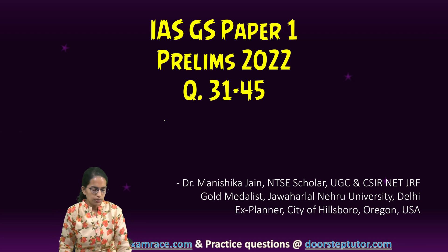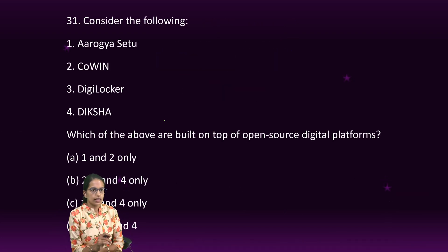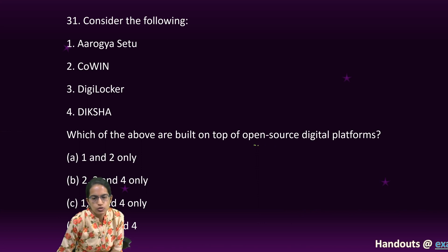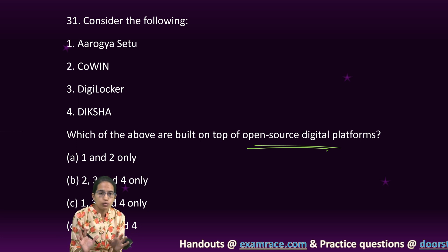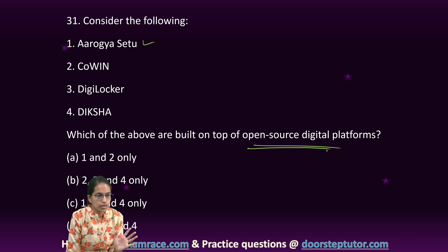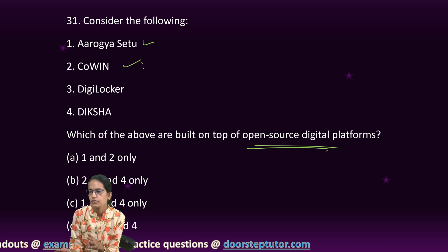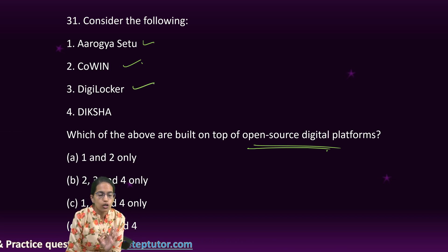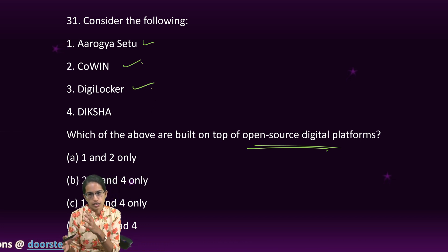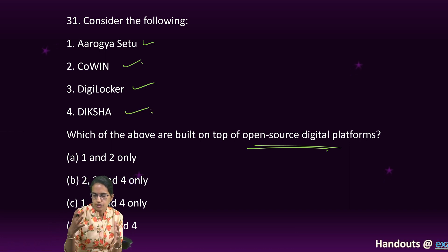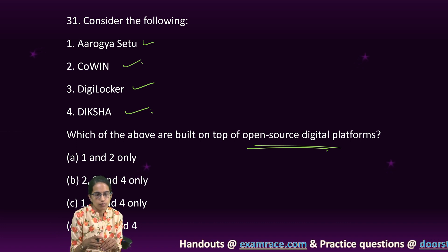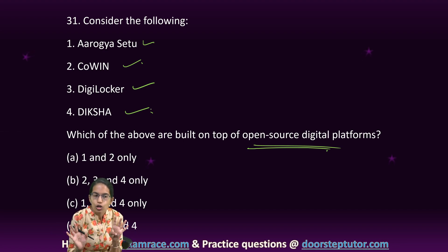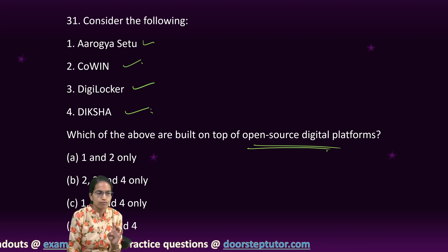Coming on to the next set of 15 questions. The first question focuses on open source digital platforms — those for which the source code is allowed to be modified by one and all. ROK Setu and CoWIN are the two released for COVID-19. DigiLocker is for keeping documents, and Diksha is a portal for education, built by Sunbird ED. All four are correct options here.